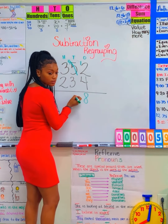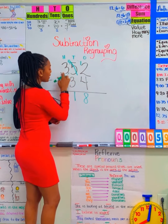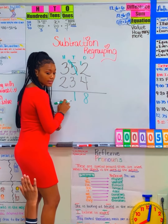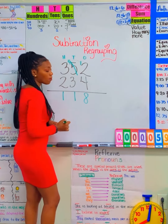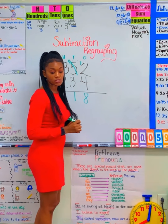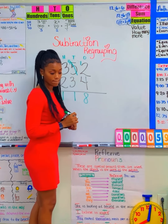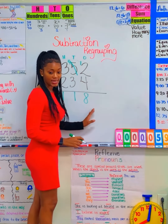4 minus 3 is 1. Then 3 minus 2 is 1. So my difference is what, class? 118. Very good.